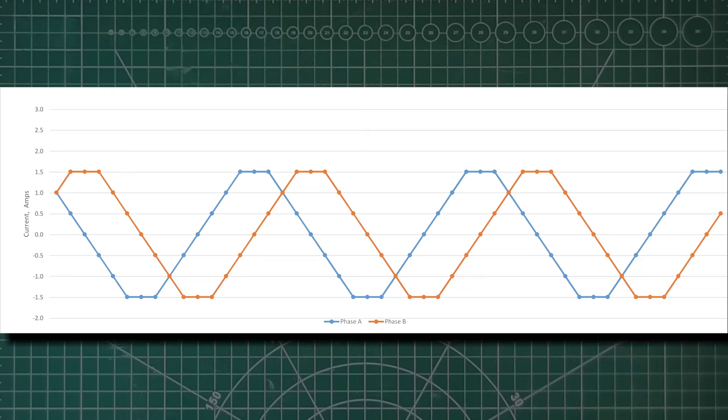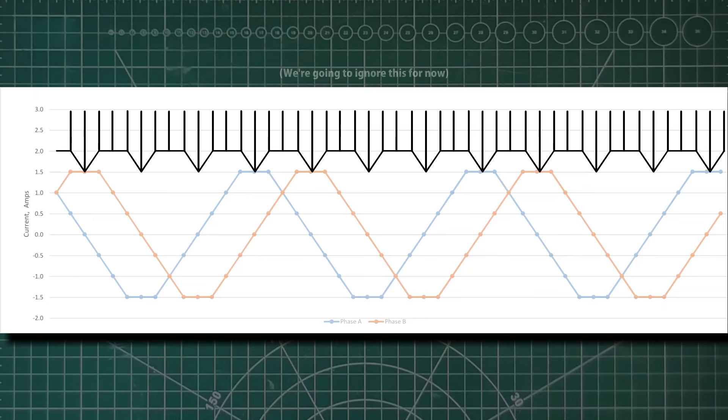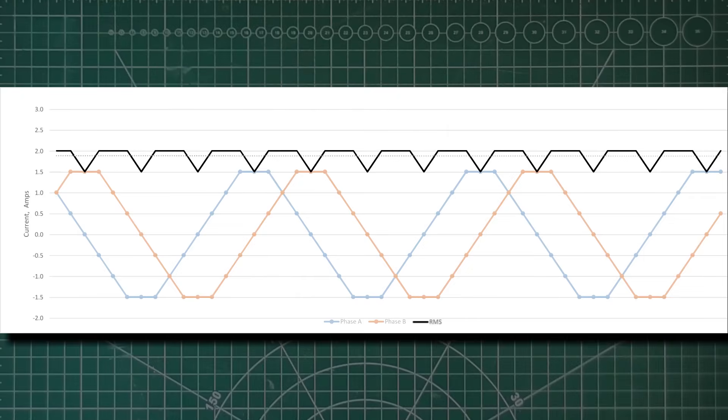If I add on the root mean square value of both phases, this gives the total current being drawn. In reality it probably looks more like this, with the peak current spikes, but we can see the average current is 2 amps or less.